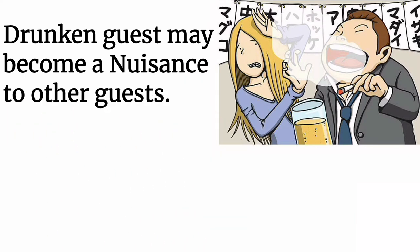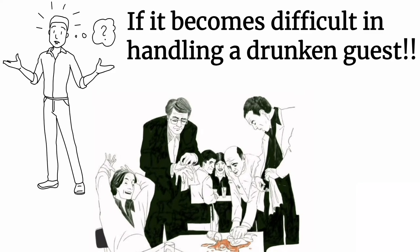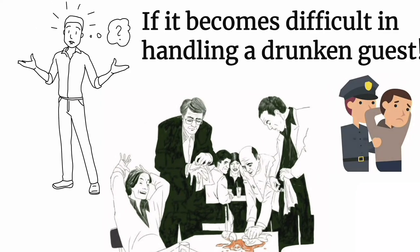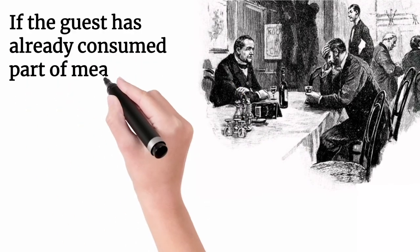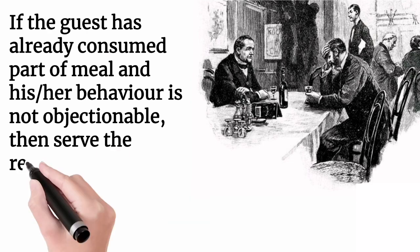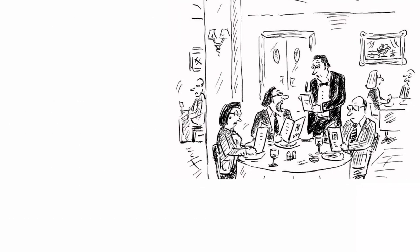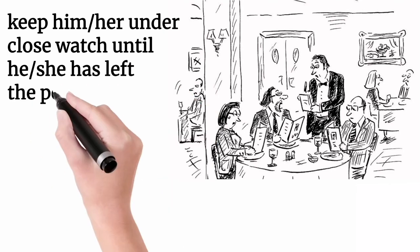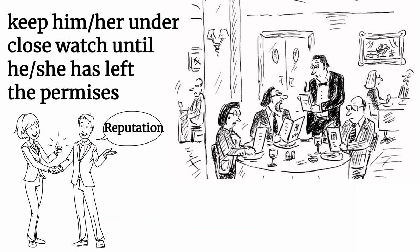If a guest is suspected of having too many drinks, the following steps should be taken. A drunken guest may become a nuisance to other guests and harm the reputation of the establishment — politely refuse them a table in the restaurant or bar. If it becomes difficult to handle the drunken guest, seek assistance from other staff members or security to remove the person from the eating area, avoiding any physical contact. If the guest has already consumed part of the meal and their behavior is not objectionable, serve the remainder of the meal normally, but offer no alcoholic beverages. On finishing the meal, keep them under close watch until they have left the premises.